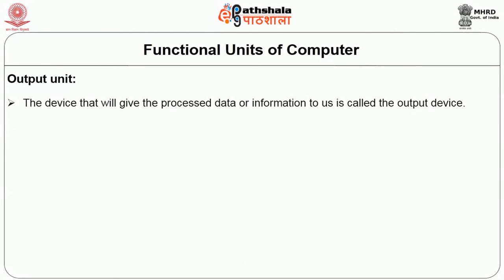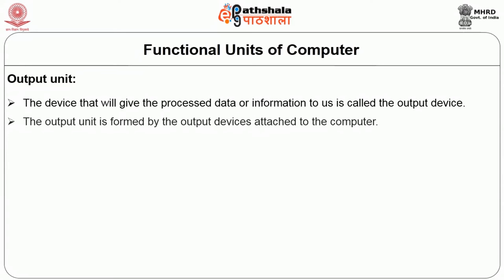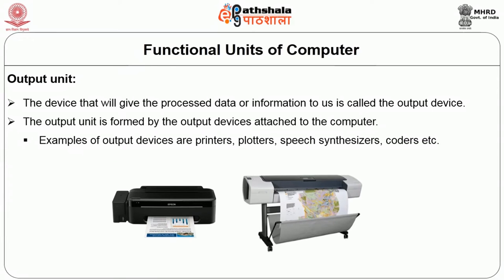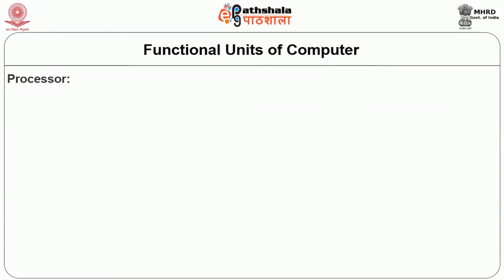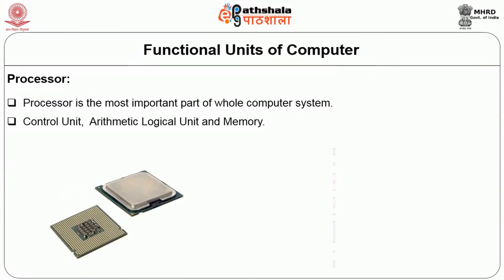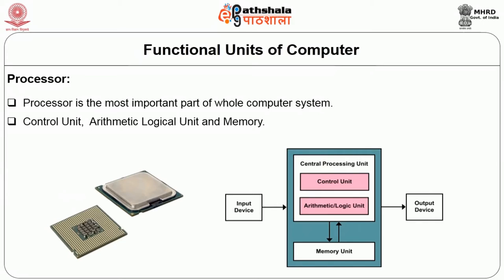The output unit is formed by output devices attached to the computer; examples include printers, plotters, speech synthesizers, and coders. The processor is the most important part of the whole computer system; without it, all peripherals and memory are of no use. The CPU is the main controlling center of the computer — it guides, directs and governs its performance.